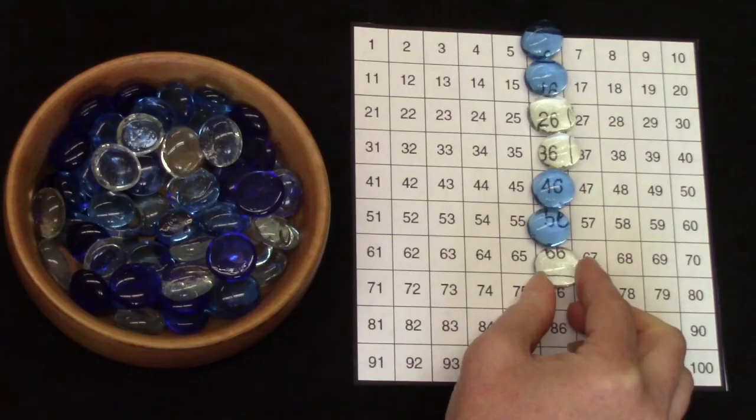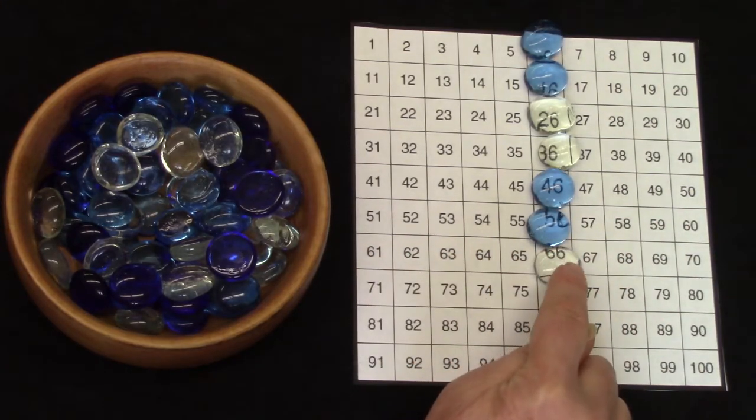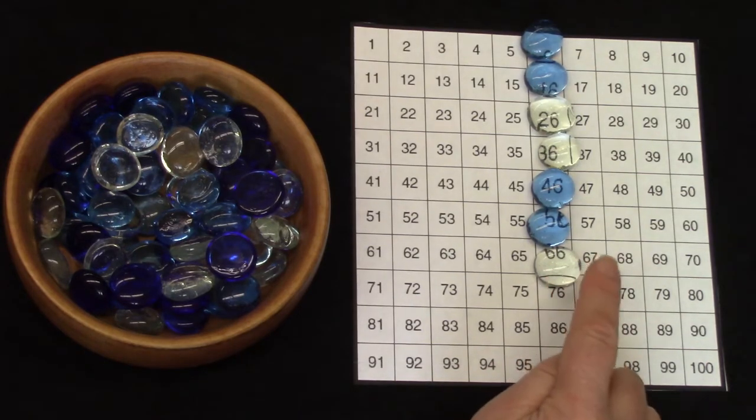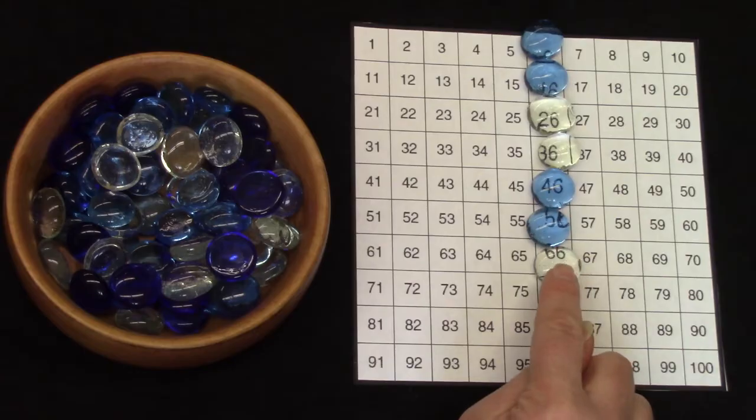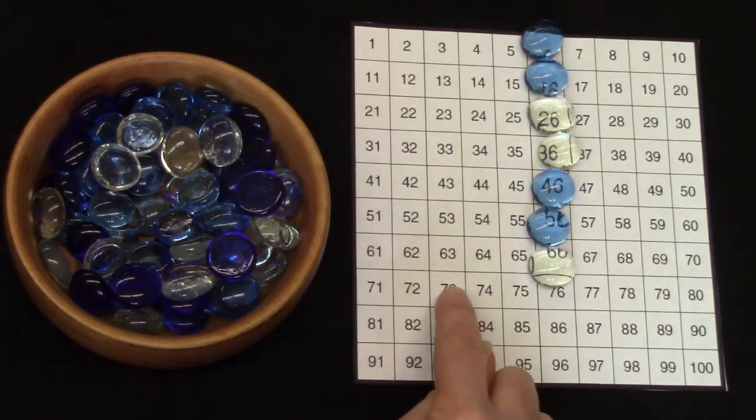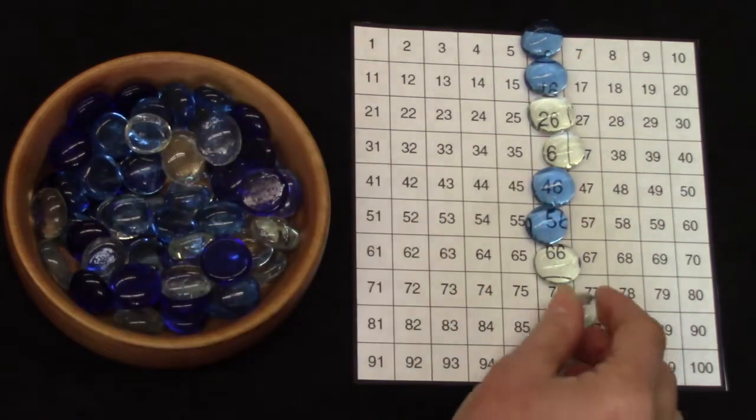Should we count just in case? 1, 2, 3, 4, 5, 6, 7, 8, 9, 10. 66 plus 10: 1, 2, 3, 4, 5, 6, 7, 8, 9, 10. It's 76.